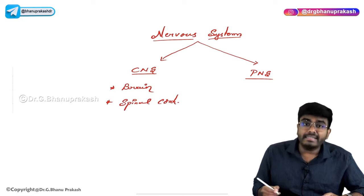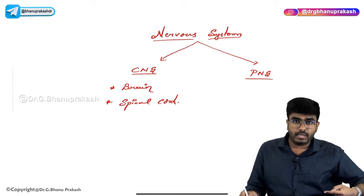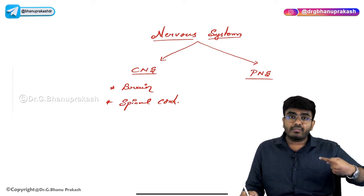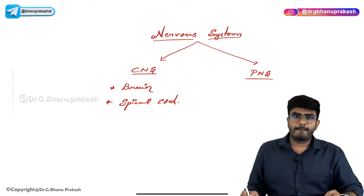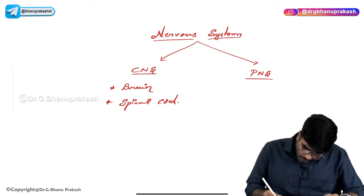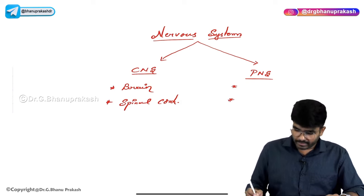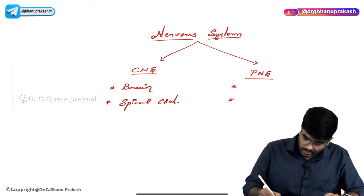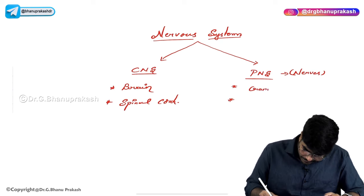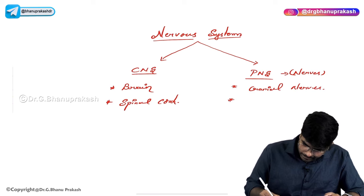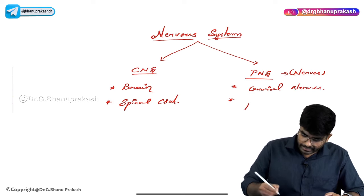The Brain and Spinal Cord are the centers for processing — these are the centers where information will be processed. Under Peripheral Nervous System, we have nerves: Cranial Nerves and Spinal Nerves.